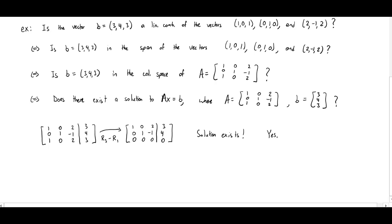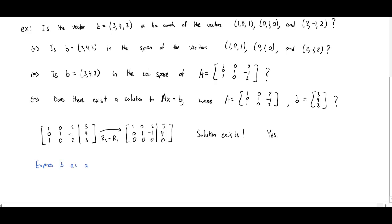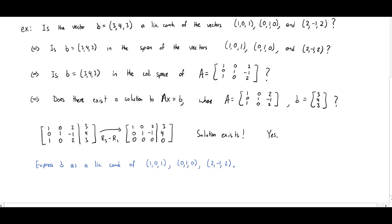We just verified that the answer to all the above questions is yes. In particular, you can say that B is a linear combination of these three vectors. Continuing from this, let's say we now want to express B as a linear combination of these three vectors. We just verified that it's possible — now we want to actually write it as a linear combination. To do this, just continue solving to get the actual solution.